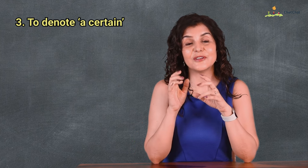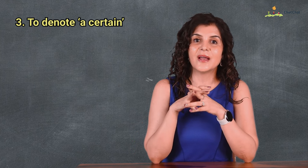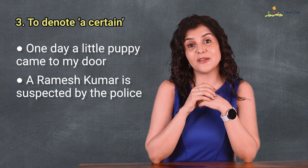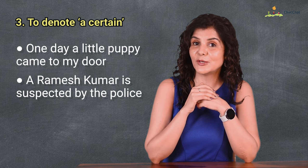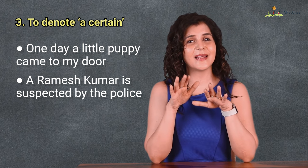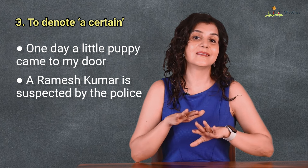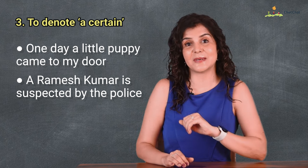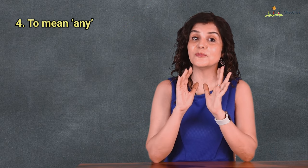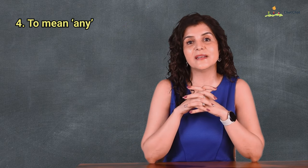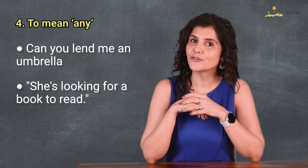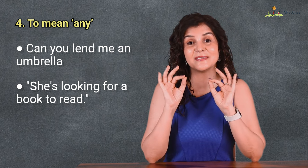Next, we can use a and an to denote a certain person or thing. For example: one day a little puppy came to my door. A Ramesh Kumar is suspected by the police — a certain person called Ramesh Kumar, but at this point it's not certain who the person is. A and an are also used to mean any — for example: can you lend me an umbrella? She's looking for a book to read — any book in general, not a specific one.